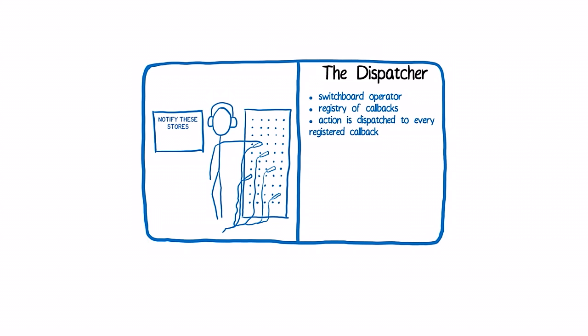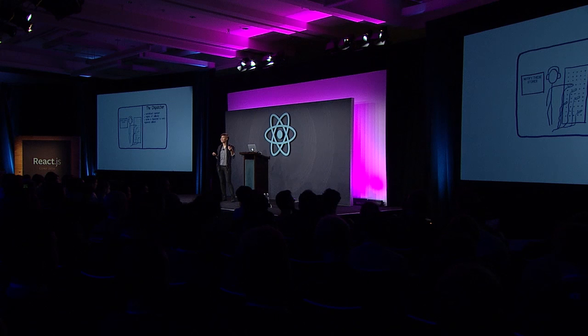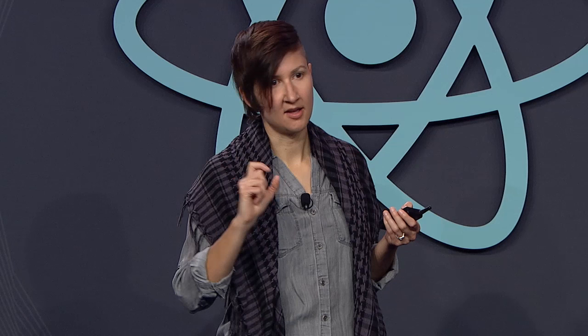The next character is the dispatcher. The dispatcher is kind of like a switchboard operator — it has a big registry of callbacks. It gets one of these actions coming in and knows how to send that change out to the rest of the system. The Flux dispatcher is a little different from dispatchers in other systems: it dispatches the action to every registered callback. In other systems, a store can listen to a particular set of actions and not others. But the Flux dispatcher doesn't concern itself with the types at all — it just passes all actions out to all the stores registered with it.